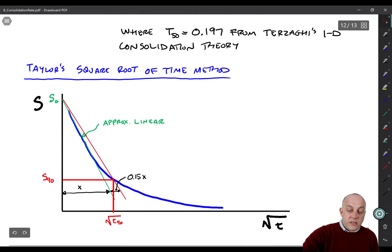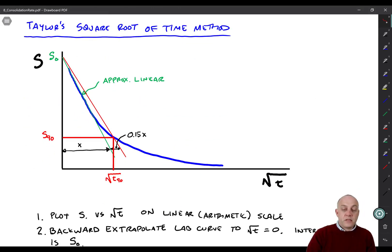Then there's another method, Taylor's square root of time method. What Taylor does here is plots on the x-axis the square root of time on a linear scale, not a log scale, an arithmetic scale. And you plot the same data. You get this blue line, that's our laboratory curve.